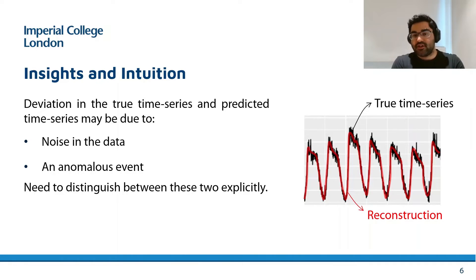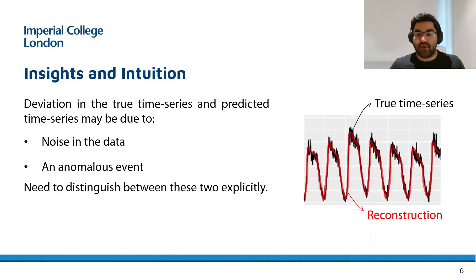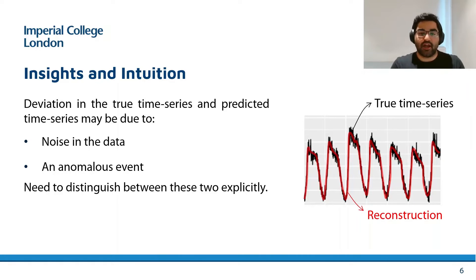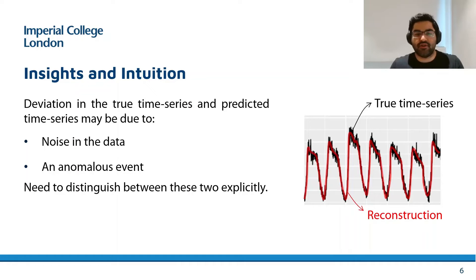For instance, considering the same call-volume time series data, the black line is the true data and the red line is the reconstruction. It is clear that the deviation between the red and black lines is higher during the day than at night, and this is possible due to the stochasticity of call volumes as a variable.